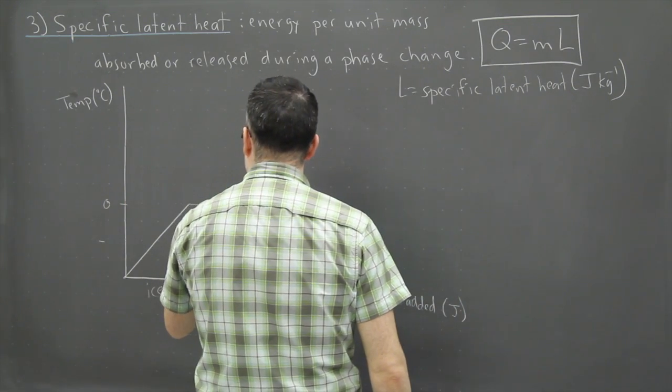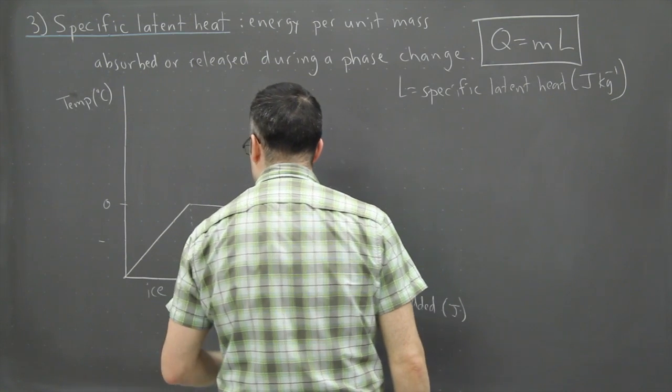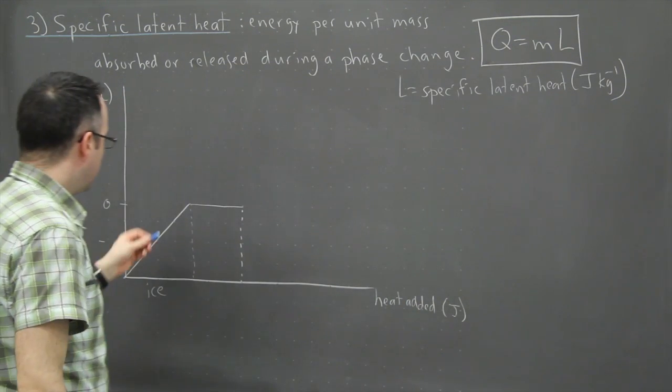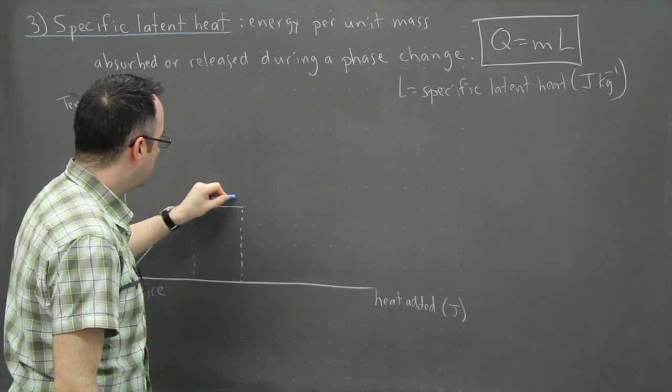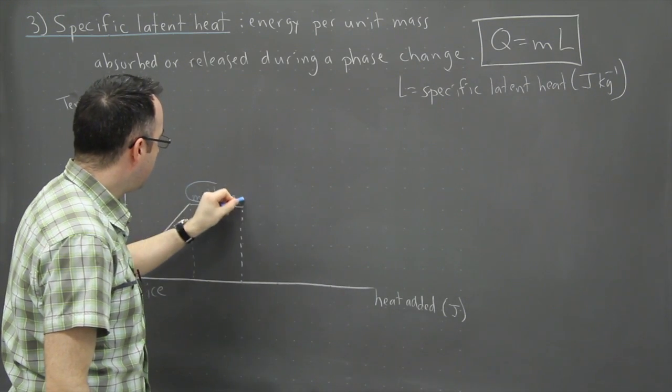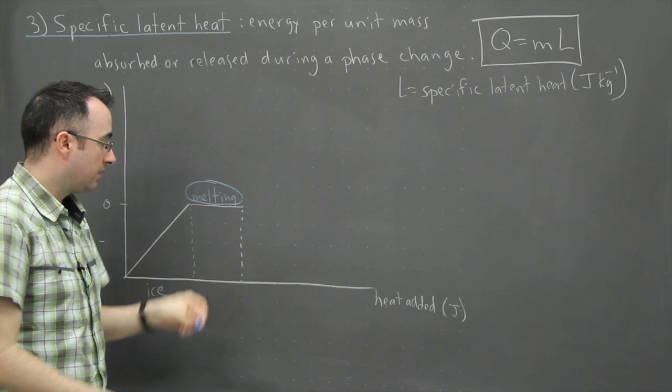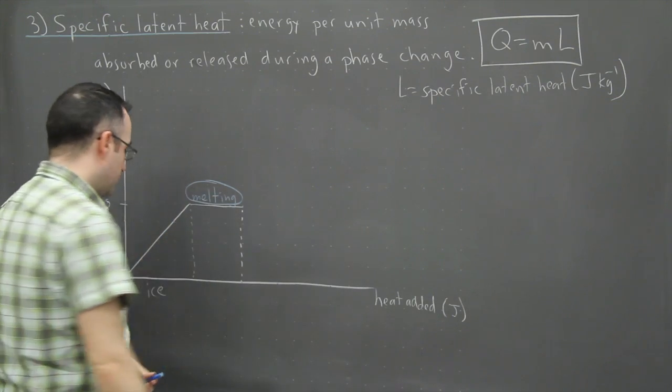So that means as I add energy these things start to wiggle more, so they're moving more, that means they get hotter up until we have a temperature of zero degrees. Then we have something very special happening here, so here we have it's melting. So this is a phase change that's happening right here.